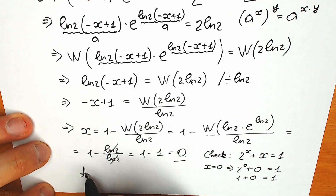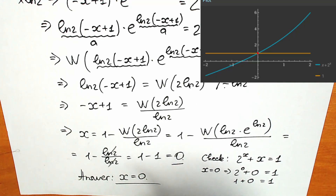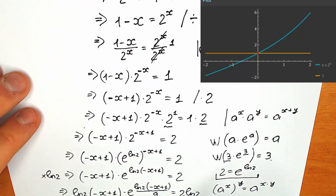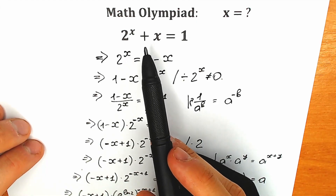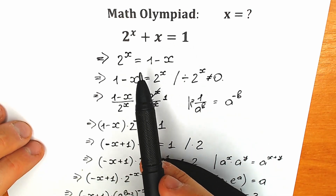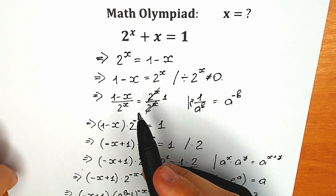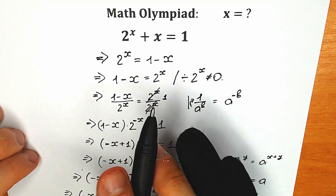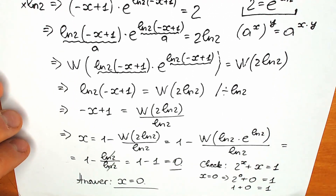Let's write our answer: x equals 0 is the correct answer. And I hope you saw the graph — you can see the point of intersection, which proves the answer from a geometric perspective. Every time you have this type of expression, like 2 to the power x plus x equals 1, you can also prove it with the geometric method by graphing and finding points of intersection. There is one point of intersection here, which confirms our solution.